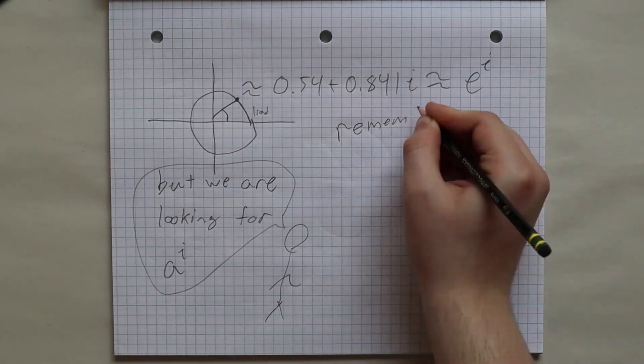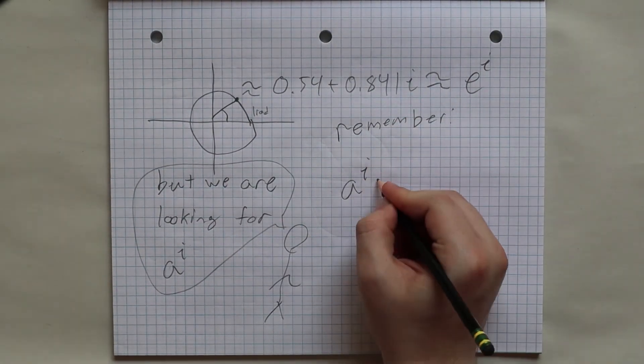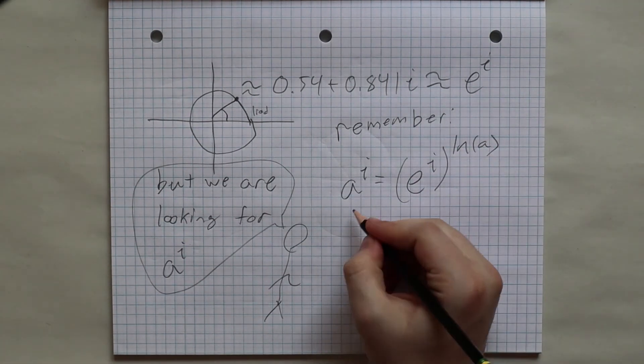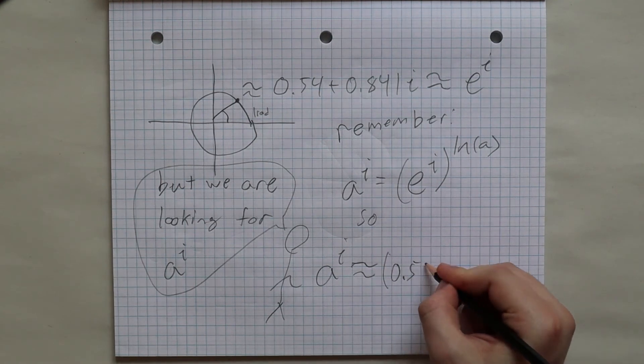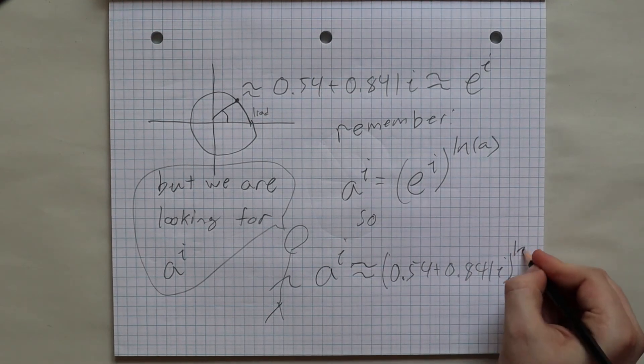Remember that a to the i is equal to e to the power of i to the power of ln of a. And so we just take this e to the i, 0.54 plus 0.841i, and raise it to the power of ln of a, and we are done.